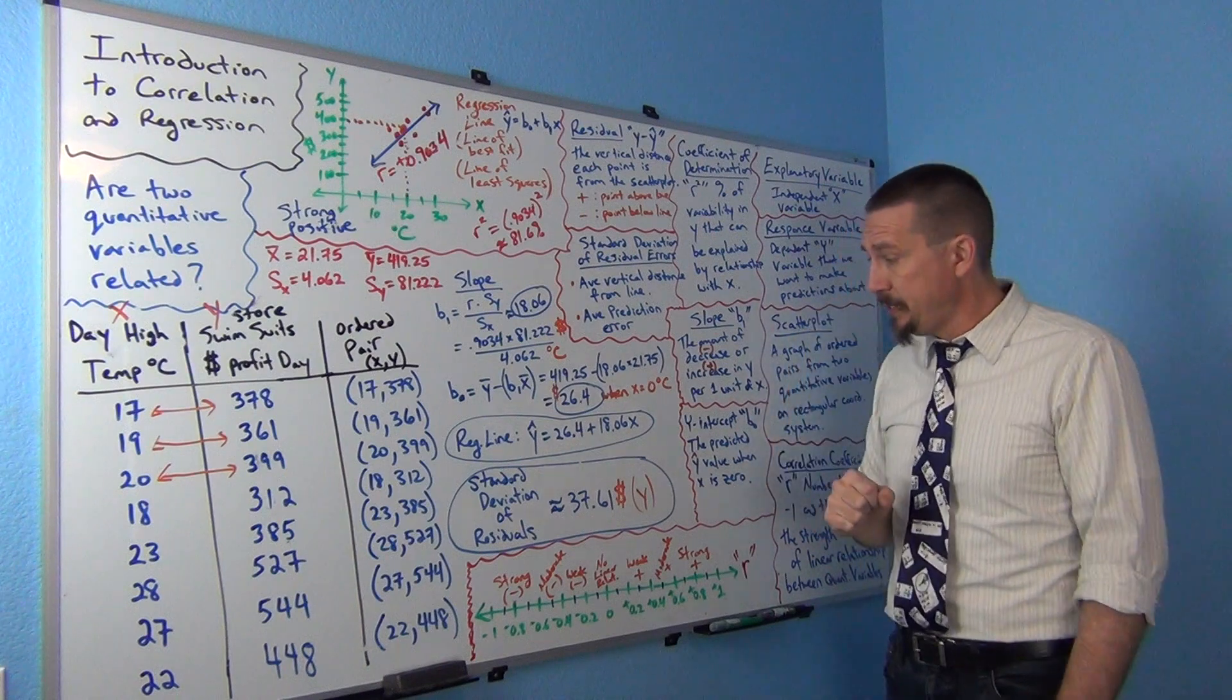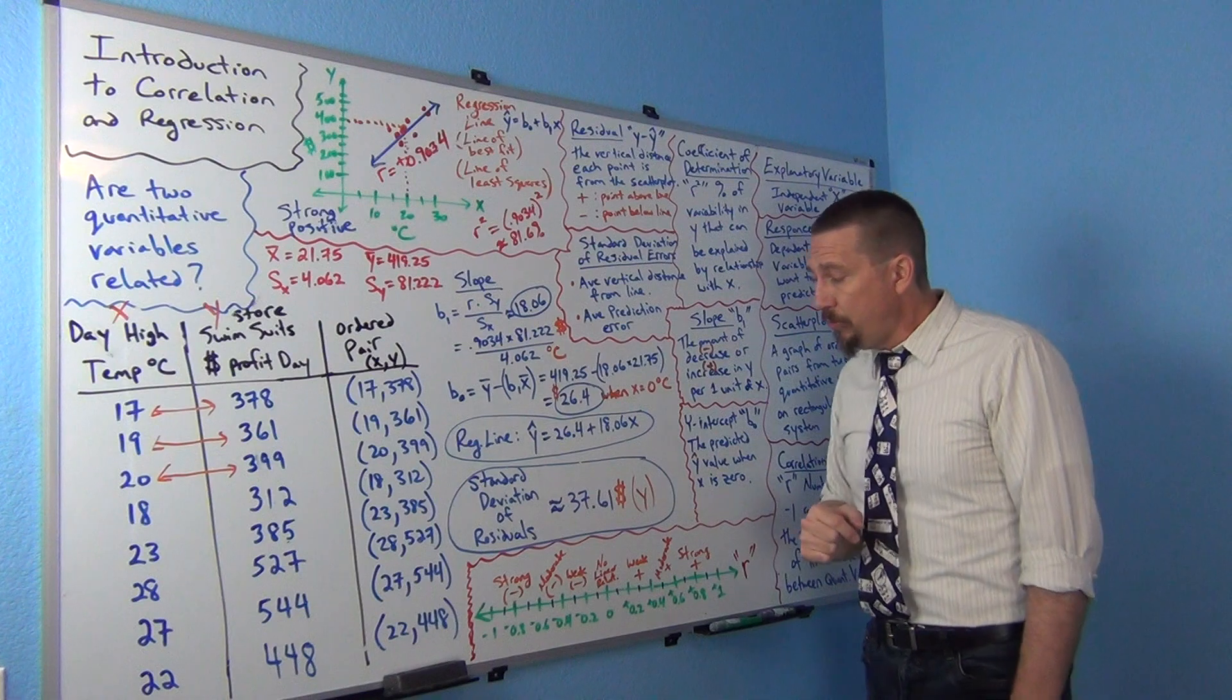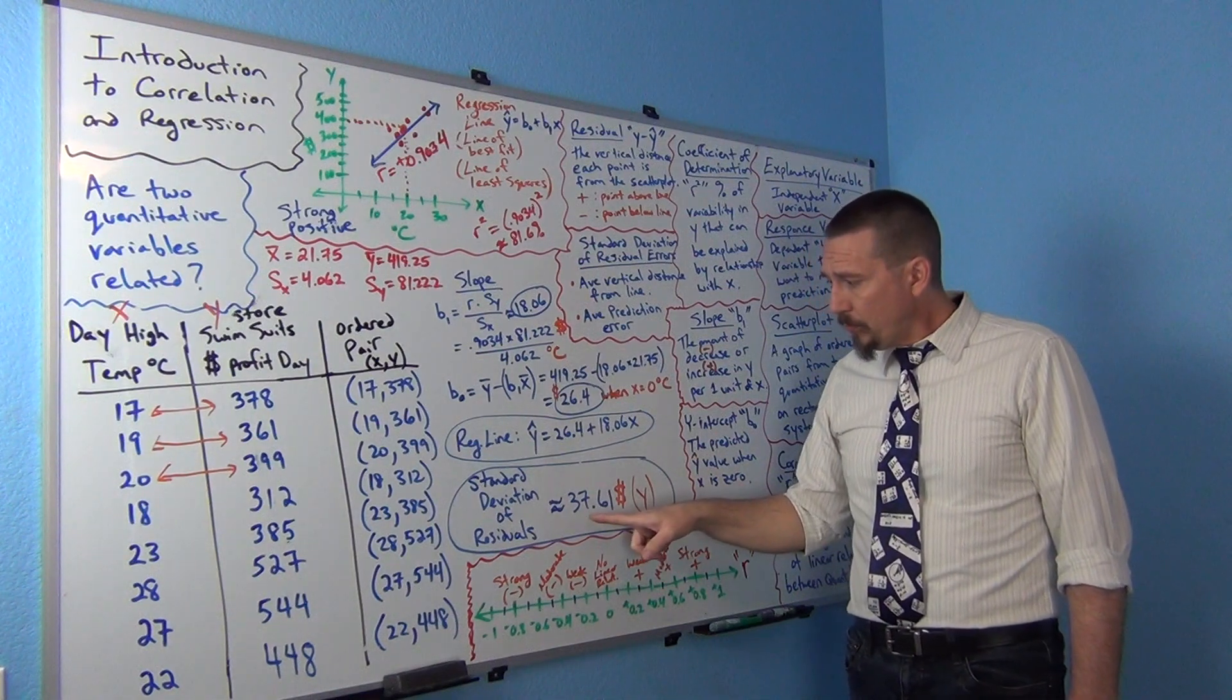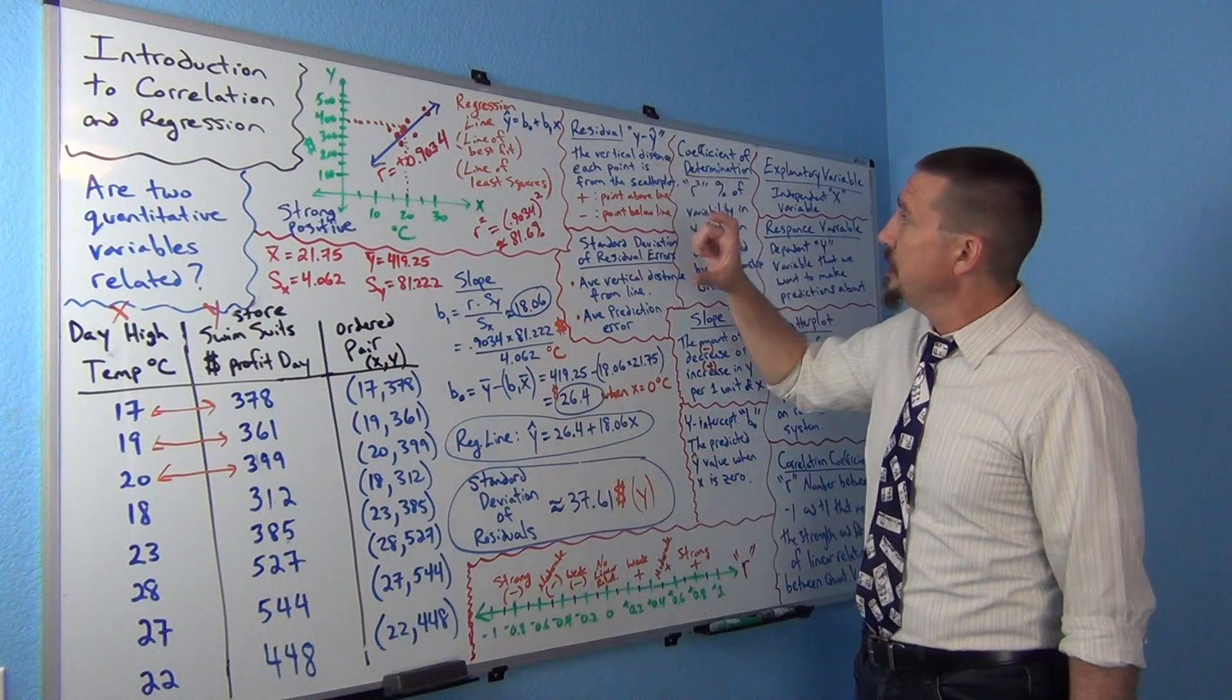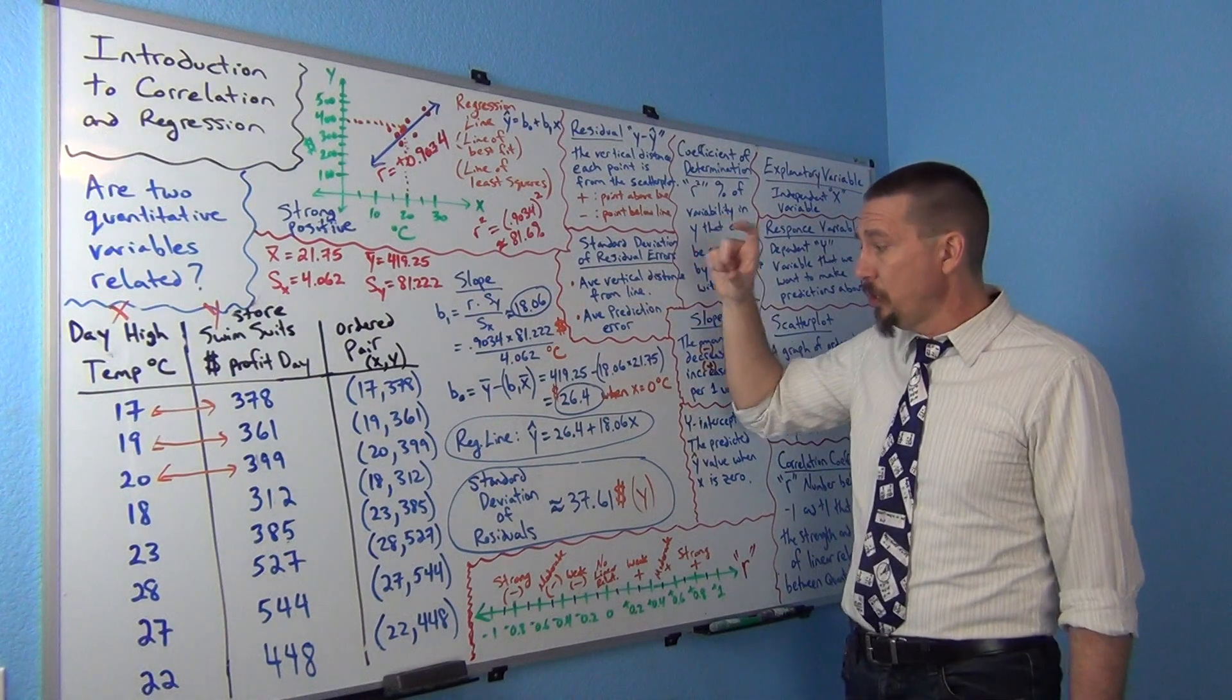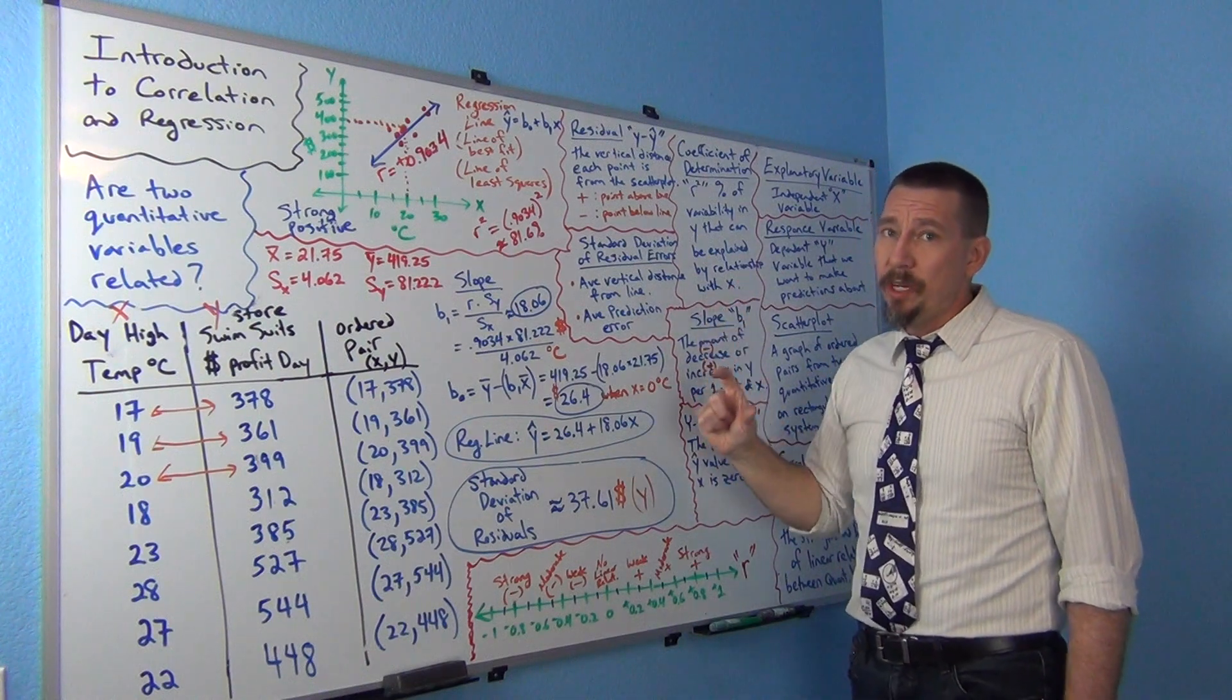I actually had StatCato calculate the standard deviation of the residuals for this data and we got 37.61. It's important to note that residuals are vertical distance, and that standard deviation of residuals is also vertical distance. So it's going to always be at the same units as whatever your y is.